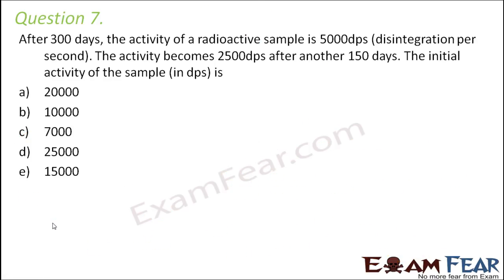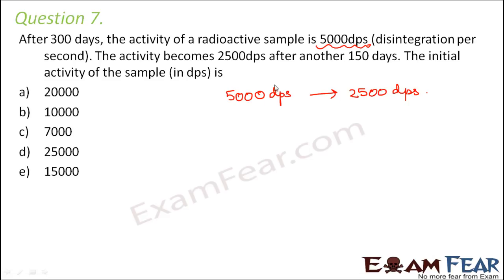Question number 7: After 300 days, the activity of a radioactive sample is 5000 disintegrations per second. The activity becomes 2500 disintegrations per second after another 150 days. The initial activity of the sample is... The activity is reducing from 5000 to 2500 — it is getting reduced to half in 150 days, which shows that the half-life is 150 days.